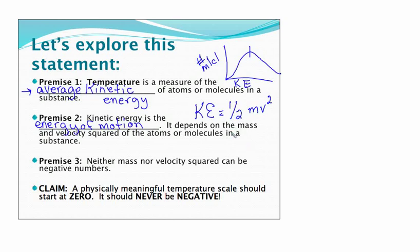You'll do more mathematics with this formula in physics. But let's take a look at the magnitude, or actually the sign, of kinetic energy. Mass cannot be negative. A substance simply can't have a negative mass. Any number squared is positive. What that means is that kinetic energy must be a positive value.